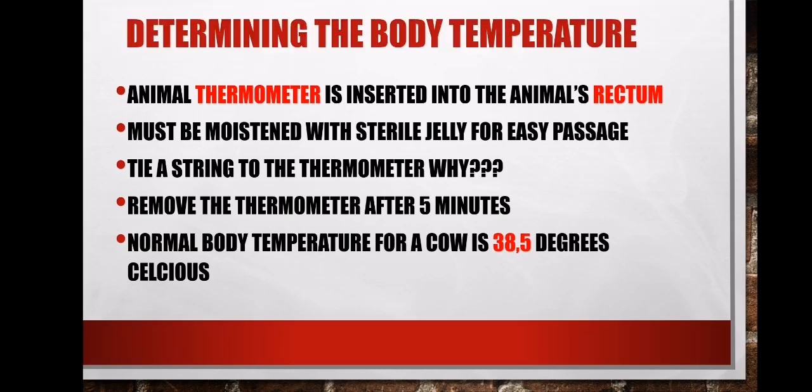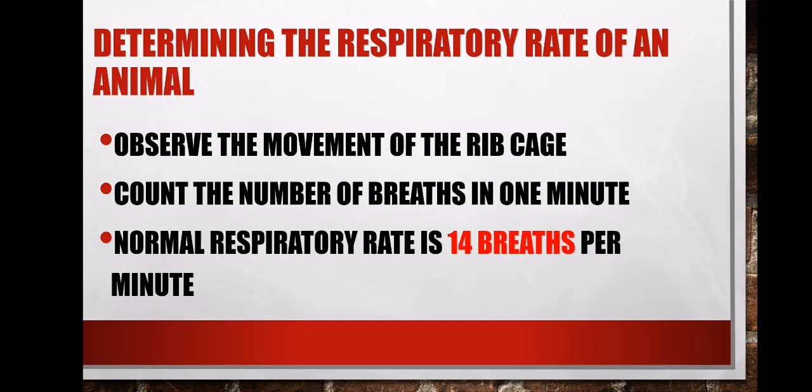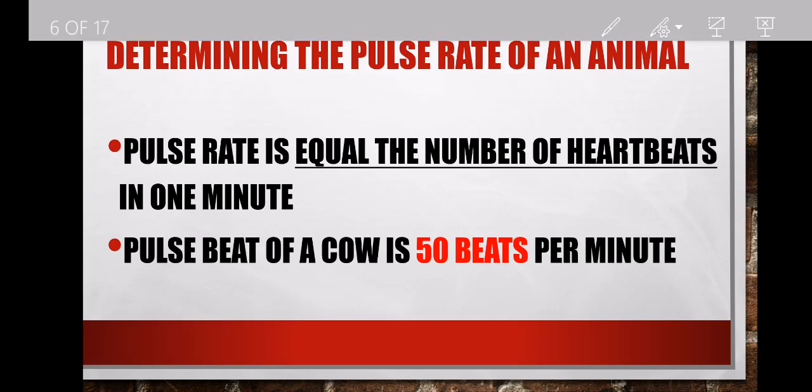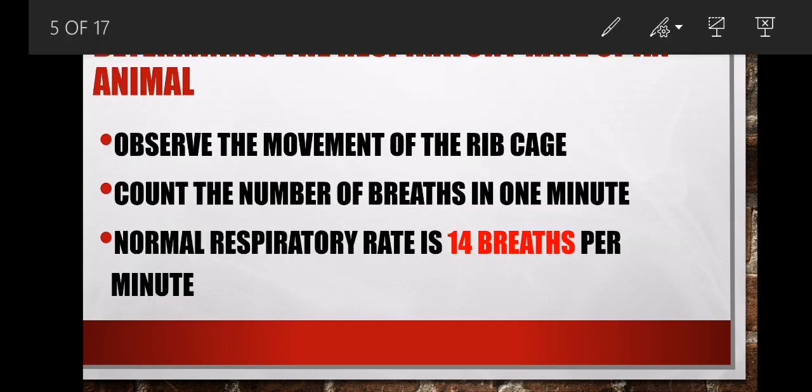Determining the respiratory rate of the animal is simple. You observe the movement of the rib cage and count the number of breaths per minute — how many times does the animal breathe per minute. If the animal is healthy, the breath count per minute must be 14 breaths. That is what is crucial for determining the respiratory rate.